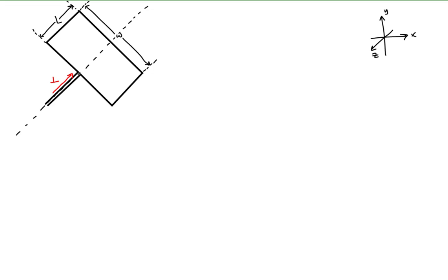The loop has current I that flows through it in a clockwise direction, as we would observe if we were to look down on it from the positive Y-axis. To help us with our analysis, we'll divide the loop into four straight-line segments numbered 1, 2, 3, and 4.